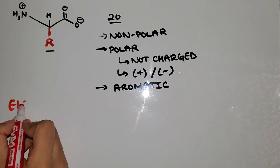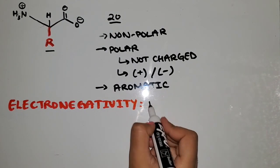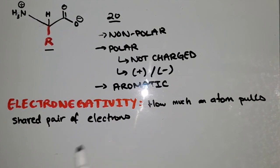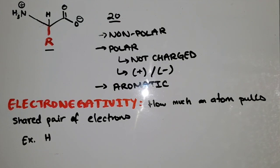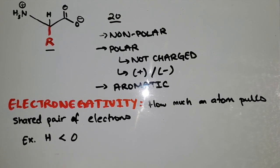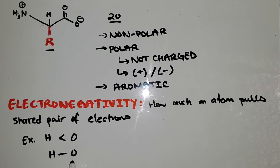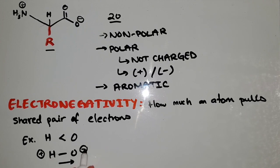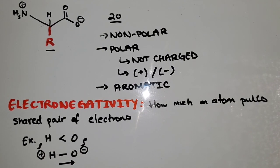Before we do that, we need to understand what electronegativity is. It is how much an atom pulls a shared pair of electrons. For example, hydrogen is not as electronegative as oxygen. So if there was a bond between hydrogen and oxygen, oxygen will pull electrons to itself because it's more electronegative. Therefore, this side will be more negative and this side will be partially positive. These are called partial charges. If a molecule has polar bonds that are not balancing each other out, that molecule is polar.